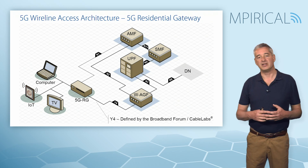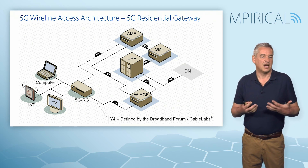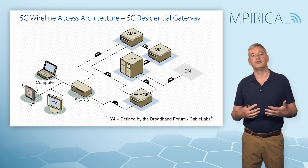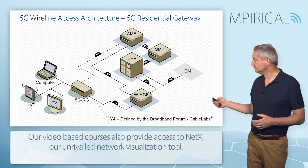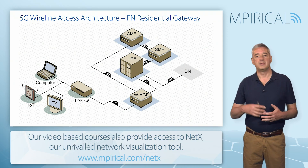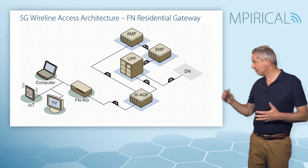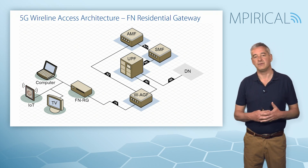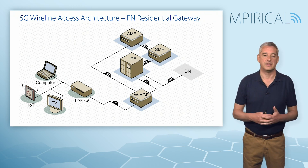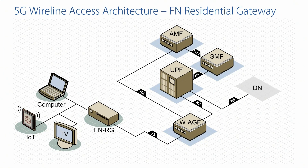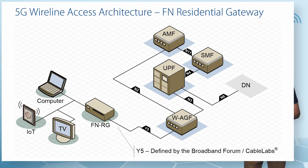To all intents and purposes, the 5G Residential Gateway looks like a standard 5G device, however in this case it connects through a wireline fixed network as opposed to the 5G radio network. The other flavor of residential gateway is termed the Fixed Network Residential Gateway, dealing with legacy connections. Again, it connects our home devices through to the 5G core via the Wireline Access Gateway Function, but this time across the Y5 reference, again defined by the Broadband Forum or CableLabs.